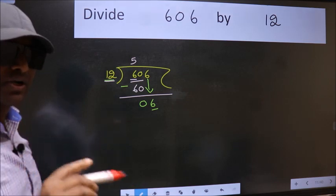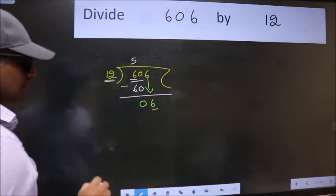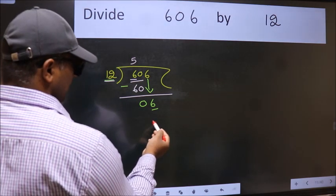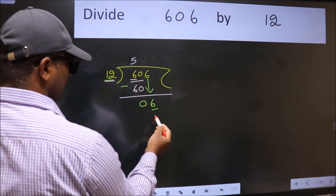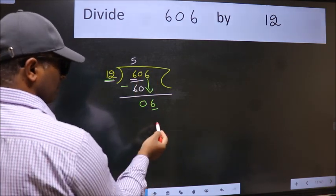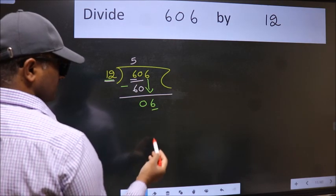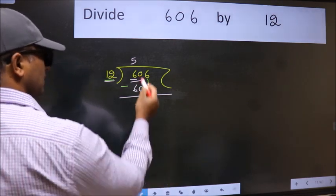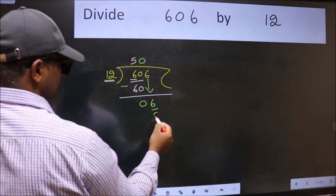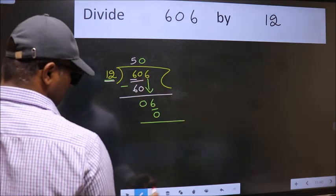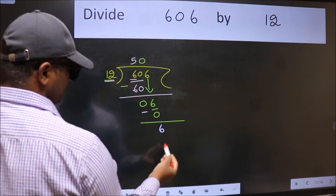Instead of that, what we should think of doing is, which number should we take here? If I take 1, we will get 12, but 12 is larger than 6. So what we do is, we take 0 here. So 12 into 0 is 0. Now we subtract, we get 6.